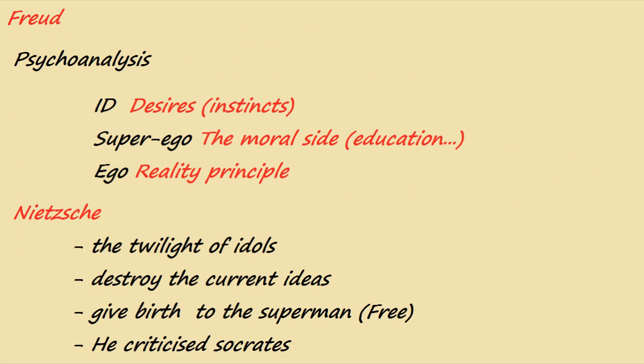Then we have the famous Sigmund Freud. When we talk about Freud, the first thing that comes to mind is psychoanalysis. You have the id, which represents the desires and instincts of a human being; the superego, which represents morality and education — everything that prevents you from doing something bad; and the ego, which is what we call the reality principle. The superego is there to control the id's desires. At that time, this was something revolutionary, and some psychiatrists still use this today.